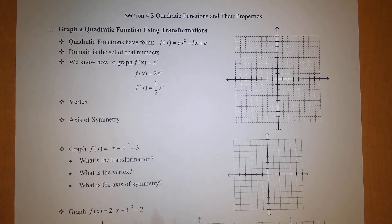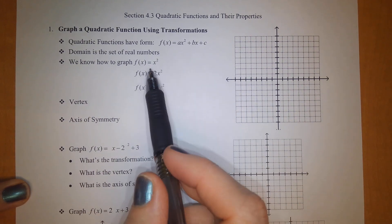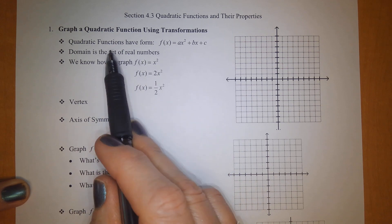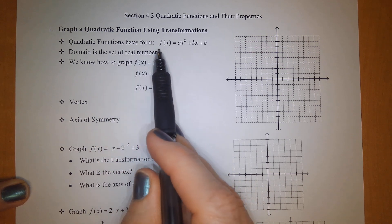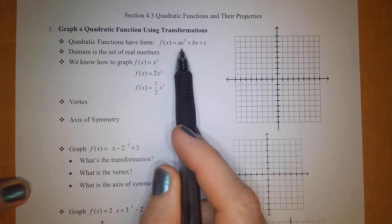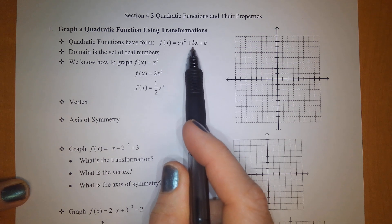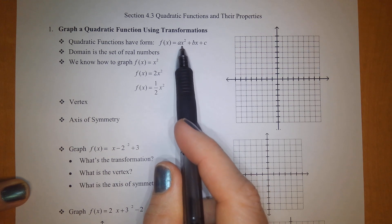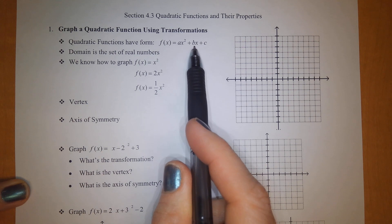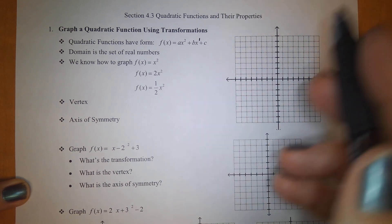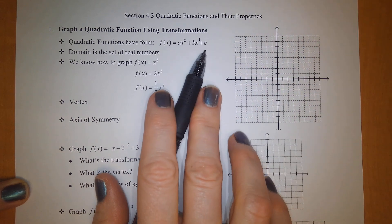First, we have to discuss what the graph of a quadratic or a parabola is going to look like. Most quadratic functions have the form ax squared plus bx plus c. This is standard quadratic form. The first term is squared, which represents the parabola. Then you have a middle term with a single x that is to the first power, and then you have a constant at the end.